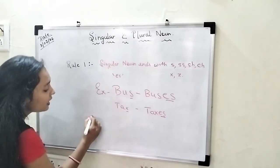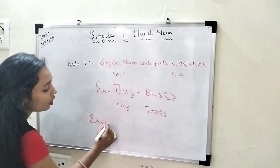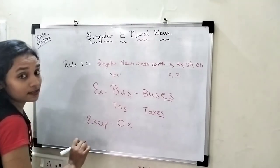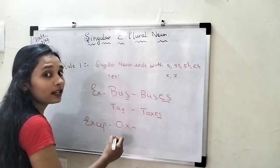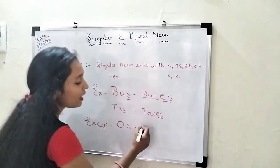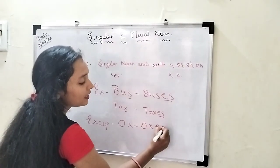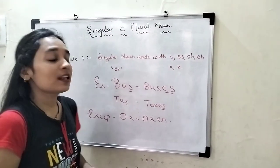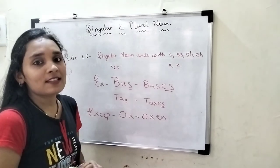But there is always an exception, and here too there is an exception. If you have the word ox, then to make it plural, we can't write oxes - we have to write oxen. Thank you, that's all for today. In tomorrow's video I will explain a new rule. Have a nice day.